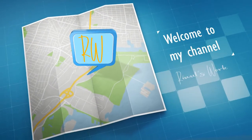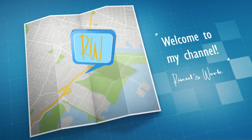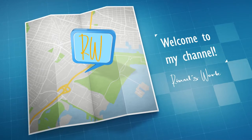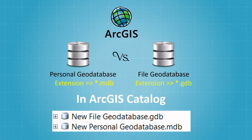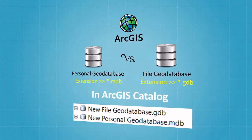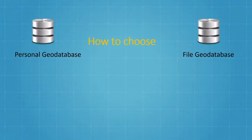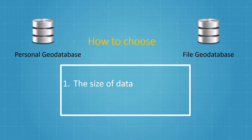Hello, welcome to The World's Work. This time I'm going to tell you how to simply choose between personal geodatabase (.mdb) and file geodatabase (.gdb) in our catalog. I assume here you already know what a geodatabase is. There are two main reasons why we use a type of geodatabase: the size of your data and how we work with your data.